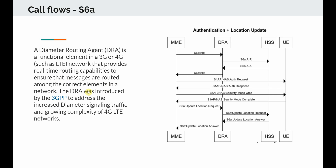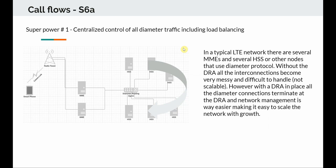The reason we need this is because you can have a lot more diameter interfaces in your network depending on how many MMEs you have, how many HSSs you have, and there are other network elements that use diameter such as PCRF. Depending on how many PCRFs you have, and P-Gateway, all that interaction is also based on diameter. So 3GPP thought it would be best to have one entity that is able to control all the diameter interactions, and that's why they proposed the DRA.